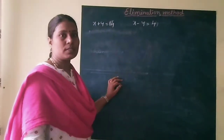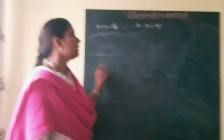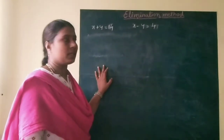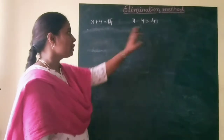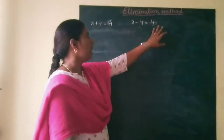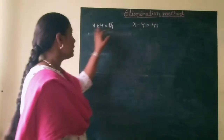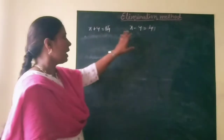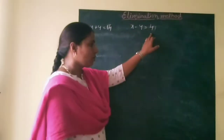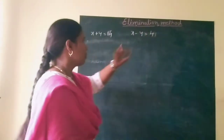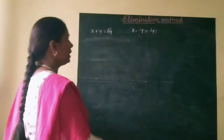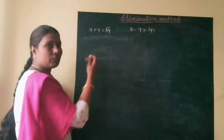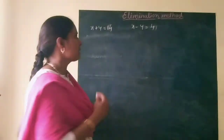Welcome to Math Solutions. This is the pair of linear equations chapter, solving by the elimination method. We have two equations: x plus y is equal to 14, and x minus y is equal to 4. Using the elimination method, we will find the values of x and y.